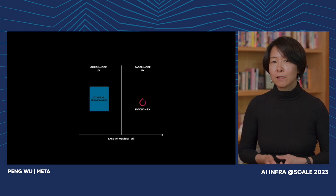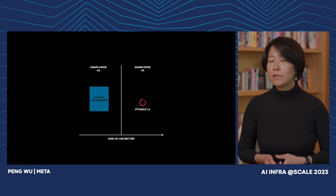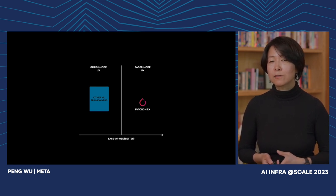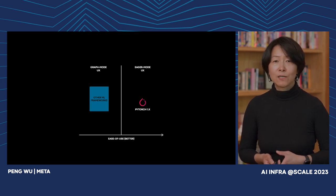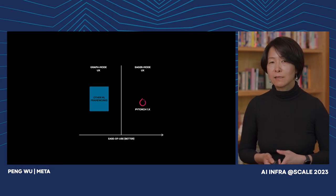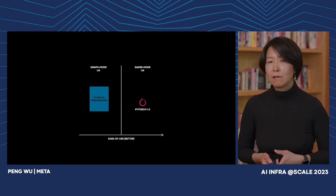But before we jump into 2.0, let's talk about PyTorch 1.0 first. 1.0 was announced about five years ago. At the time, the whole industry of machine learning frameworks were mostly embracing and designing around graph mode. It was believed that graph modes allow compiler optimizations and could potentially provide better performance. But the catch of graph mode is that it requires the developer to think in graphs, which is really counterintuitive, hard to express, and even harder to debug.